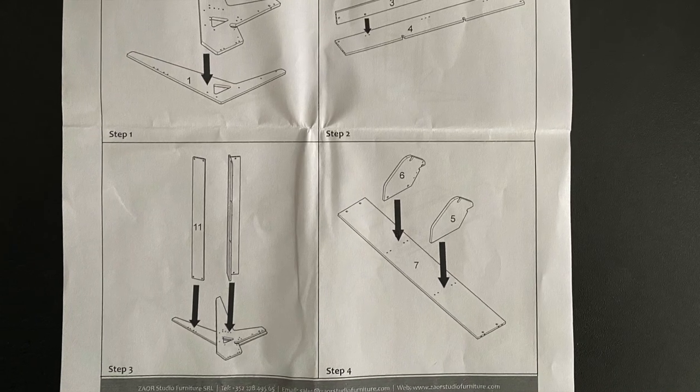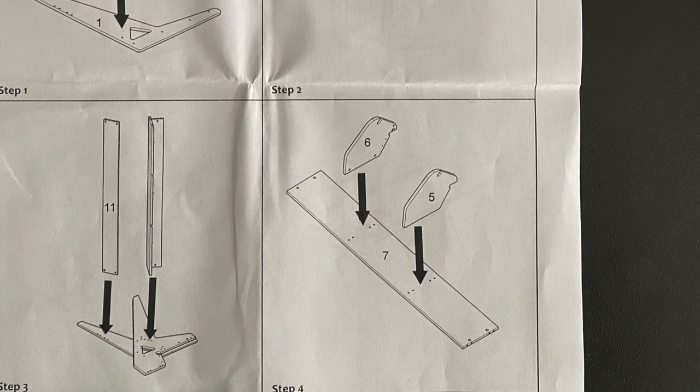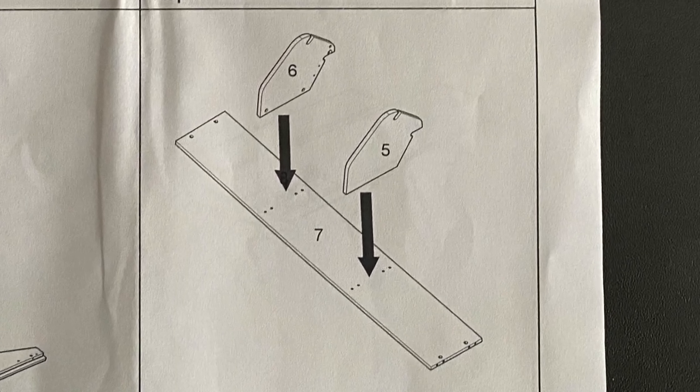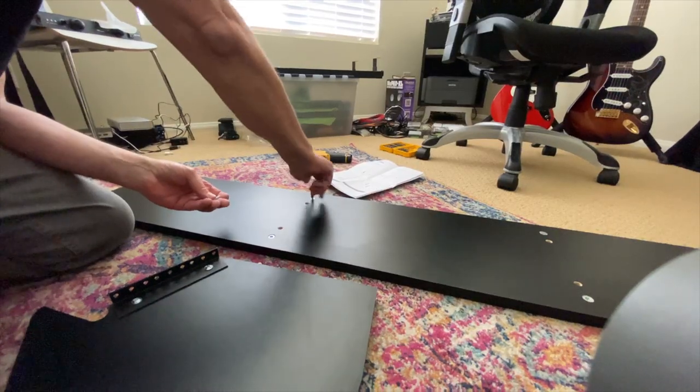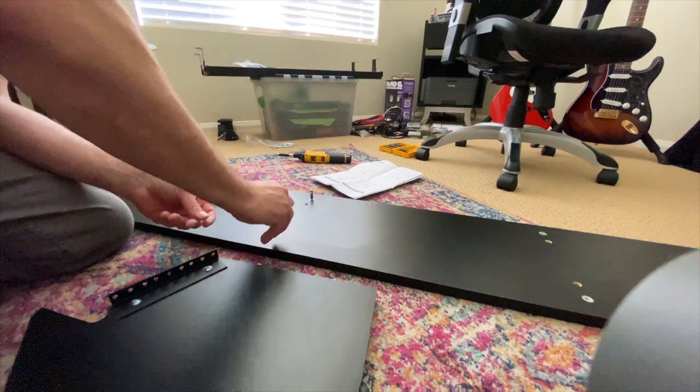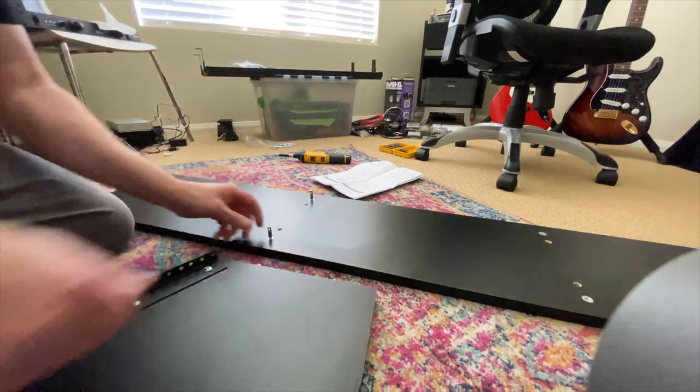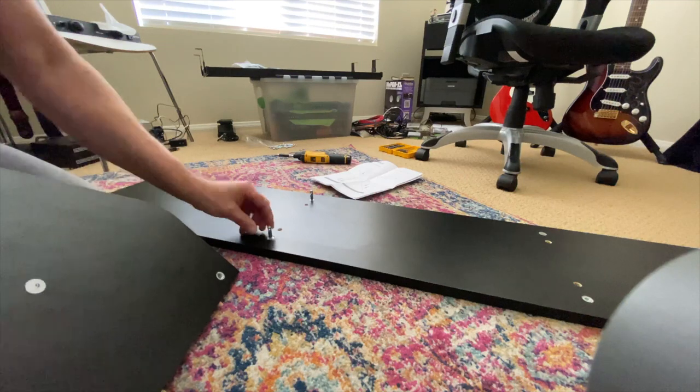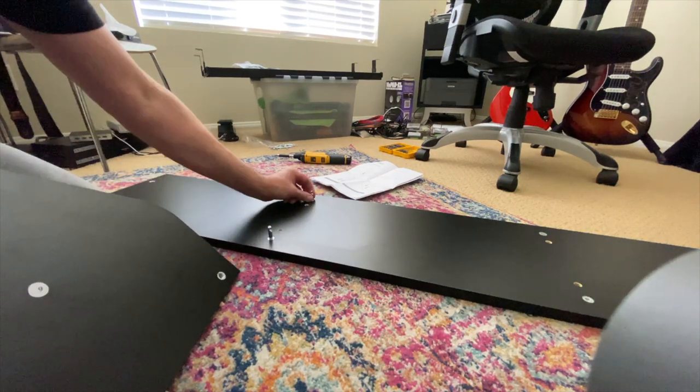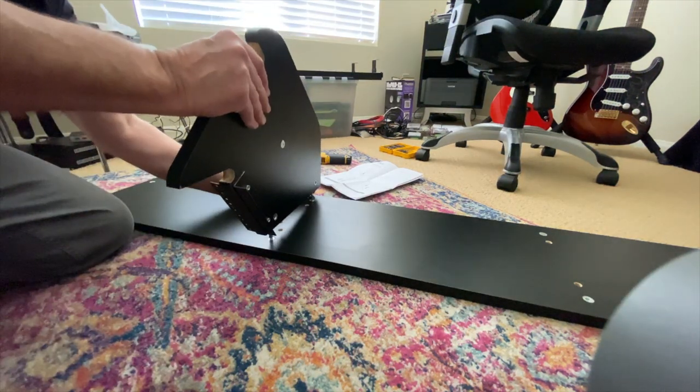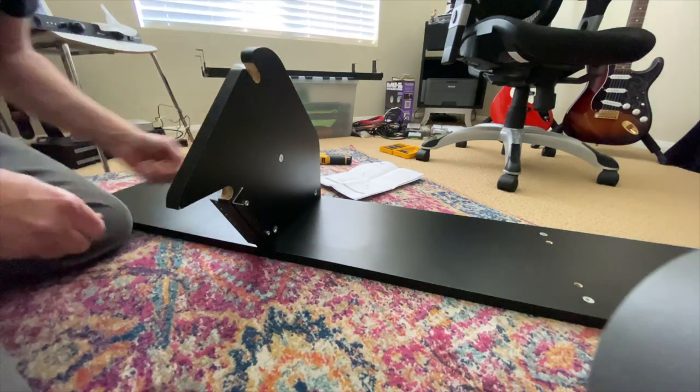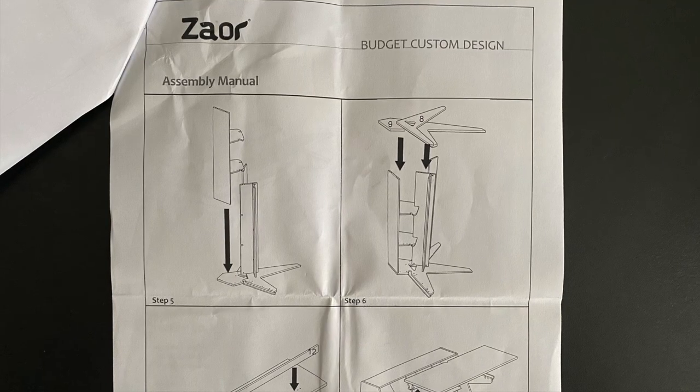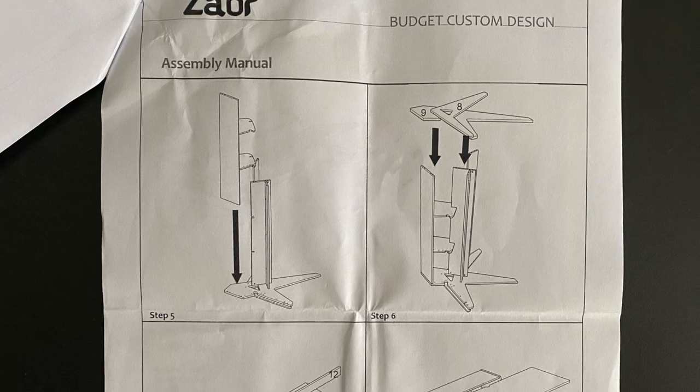In step four, you're going to have to attach the rack rail supports to plank number seven. This is actually going to be the monitor bridge, the top of the desk. Just make sure you look at the instructions to show the direction of where the rails would be. On the next page, you're going to go to step five.